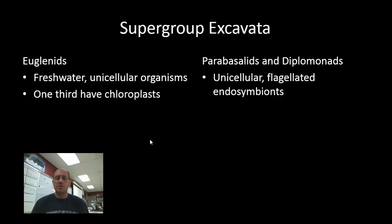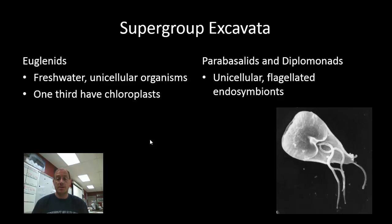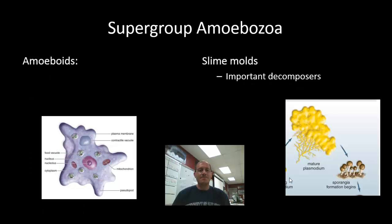The parabasalids and the diplomonads are unicellular flagellated endosymbionts, meaning these organisms reside inside other organisms. One characteristic example is Giardia, pictured here. Giardia is the culprit in a condition that sometimes affects campers in which they ingest it and it wreaks havoc on their intestines.